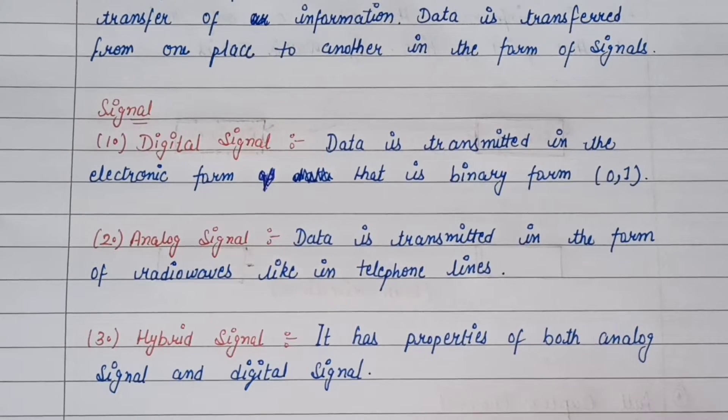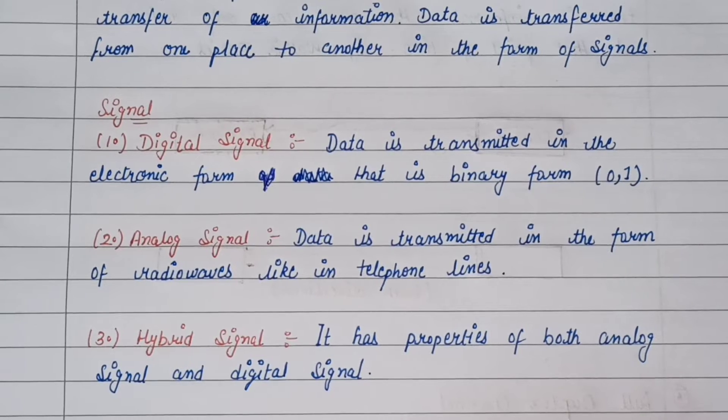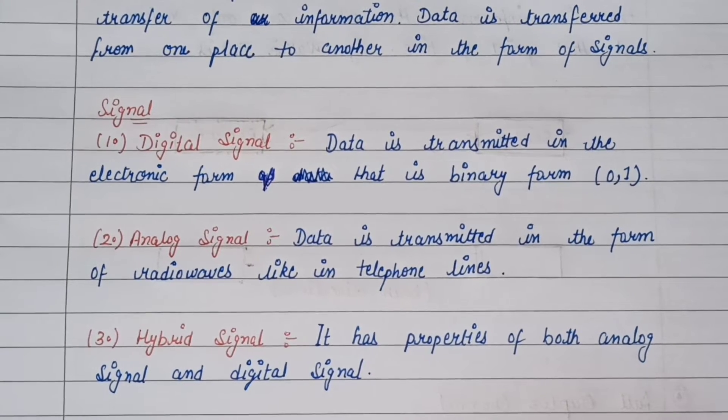First, let's see the digital signal. Data is transmitted in the electronic form, that is binary form — 0, 1.